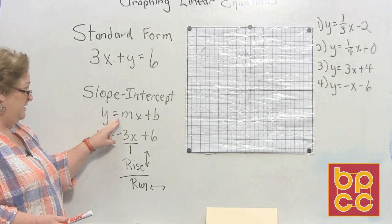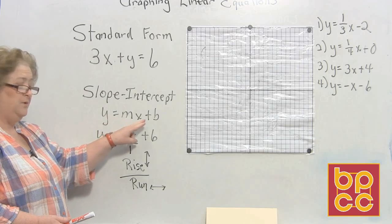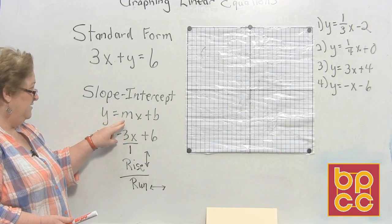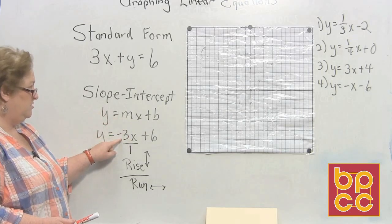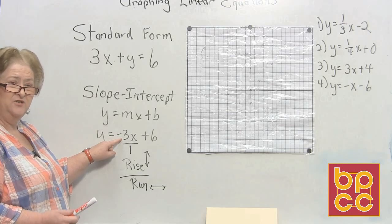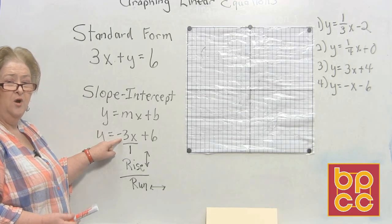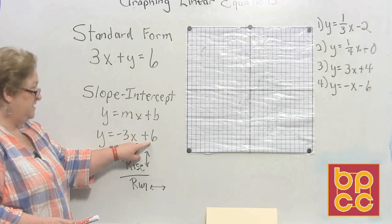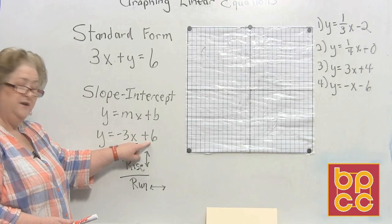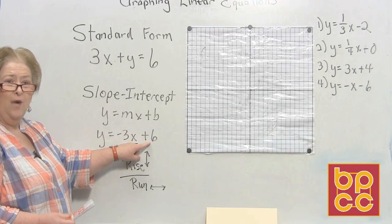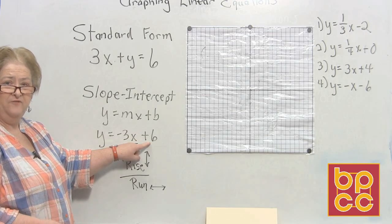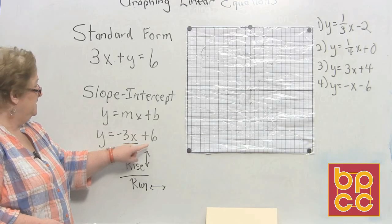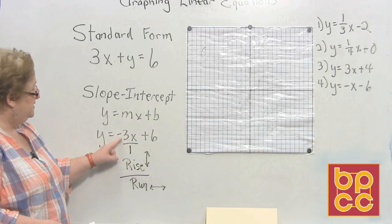The slope-intercept formula is y = mx + b. The m stands for the number attached to the x — that is the slope, or the angle of the line that we'll be drawing. The b stands for the y-intercept: where am I going to put my first point on the y-axis?